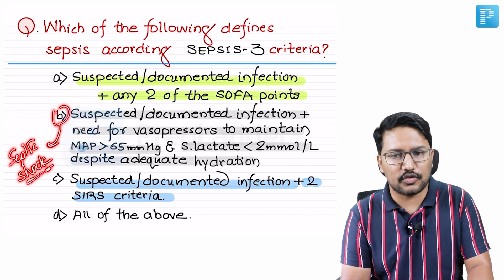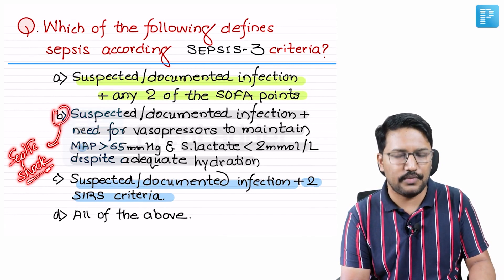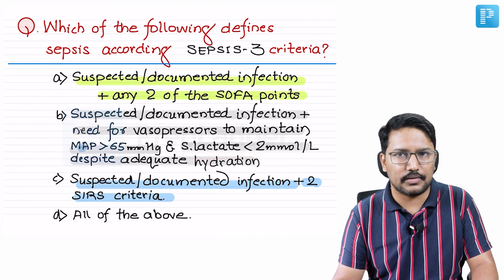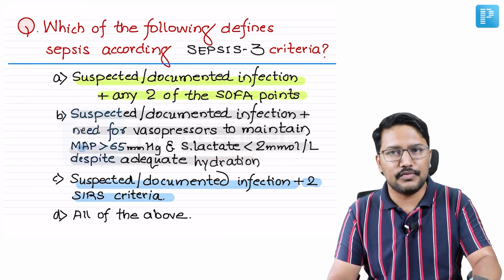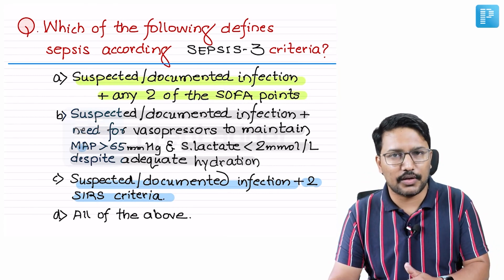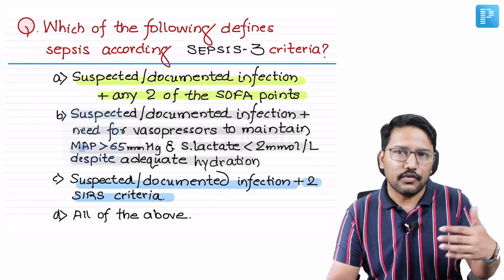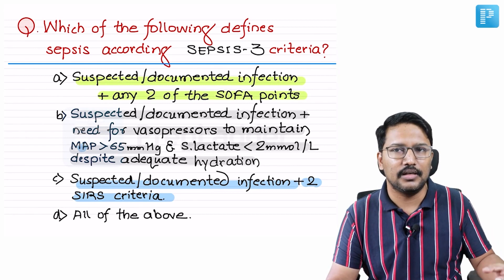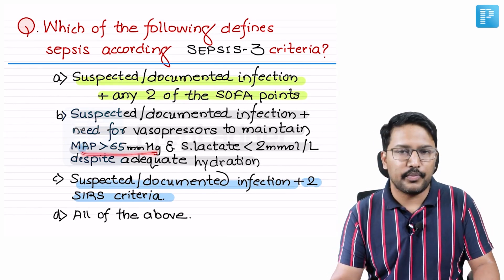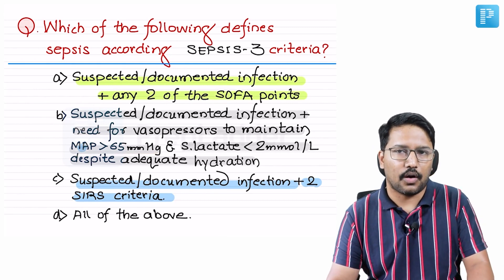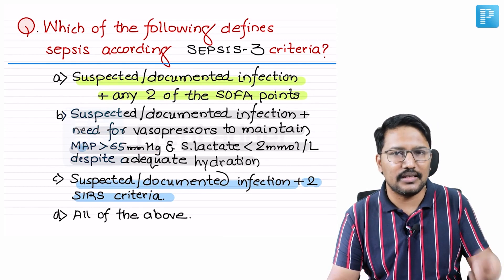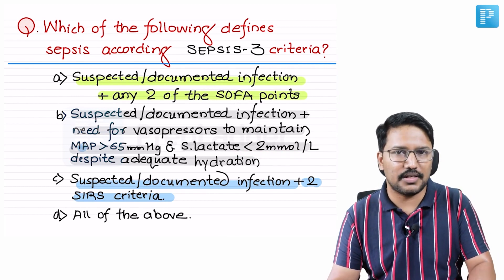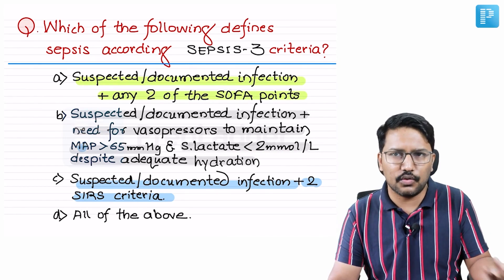Septic shock is defined as suspected or documented infection plus need for vasopressors to maintain mean arterial pressure of more than 65 mmHg, or serum lactate under two millimoles per liter, with emphasis on serum lactate as a marker of hypoperfusion. If a patient presents with suspected or documented infection and is hypotensive, you cannot immediately call it septic shock. You must first address and correct the fluid deficit. Only if the patient continues to require vasopressors despite fluid resuscitation, or still has tissue hypoperfusion with serum lactate above two millimoles per liter, is it considered septic shock. Mere hypotension does not define septic shock.